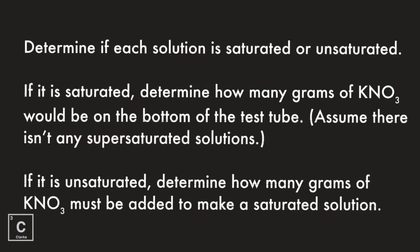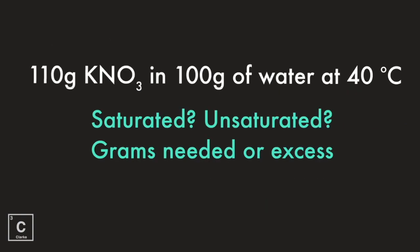These are the instructions for the next few questions: determine if each solution is saturated or unsaturated. If it is saturated, determine how many grams of potassium nitrate would be on the bottom of the test tube — we're going to assume there are no supersaturated solutions. If it is unsaturated, determine how many grams of potassium nitrate must be added to make a saturated solution. For example: 110 grams of potassium nitrate in 100 grams of water at 40 degrees Celsius — is this saturated or unsaturated? How many grams are needed to be saturated? If it's saturated, how many grams are in excess at the bottom of the test tube?